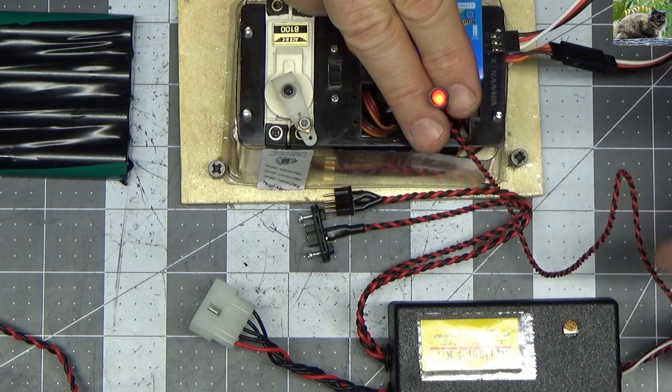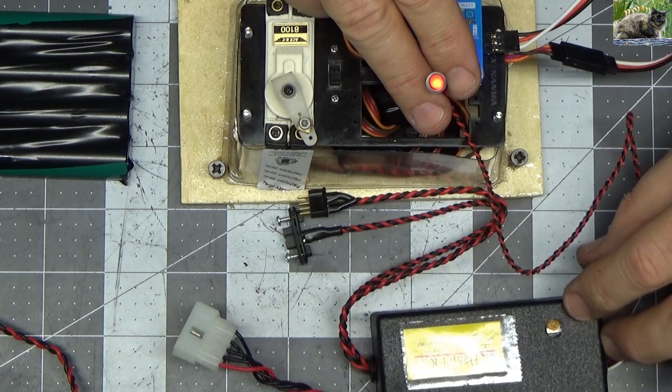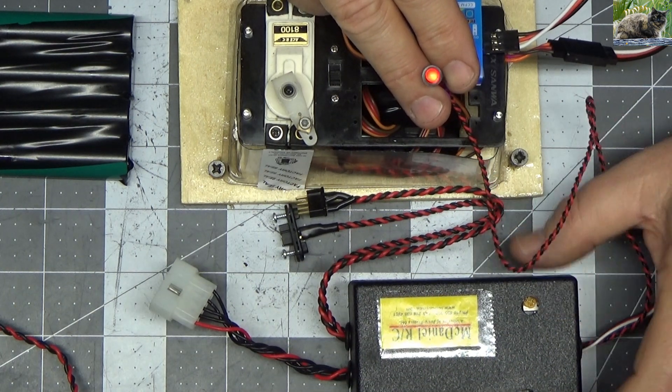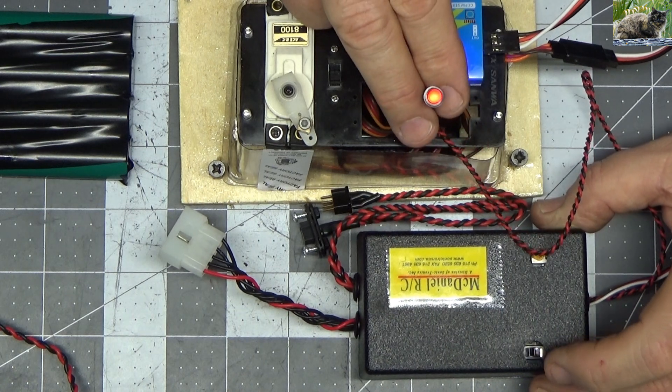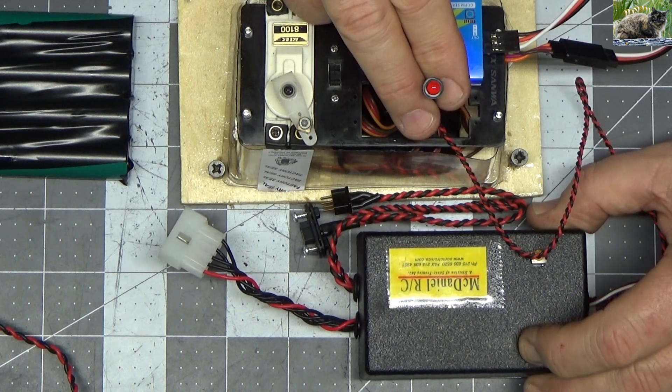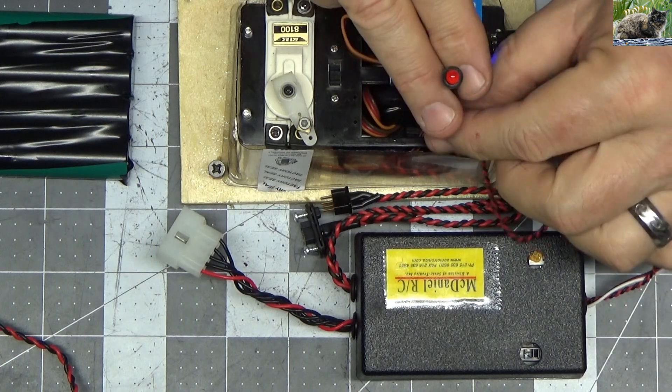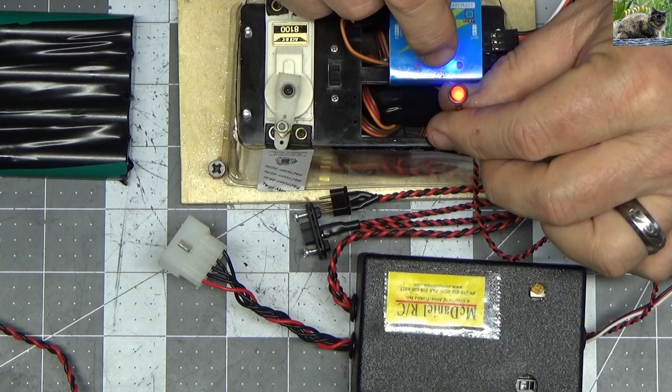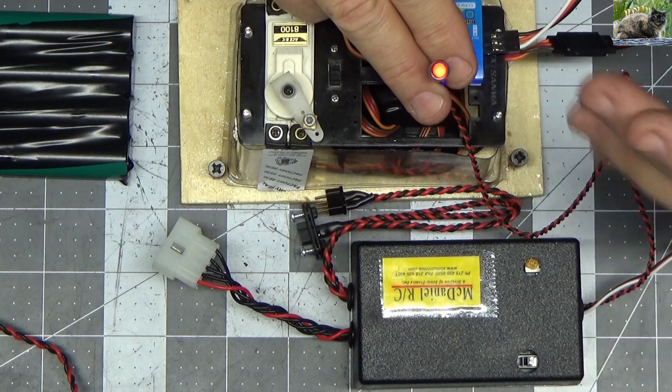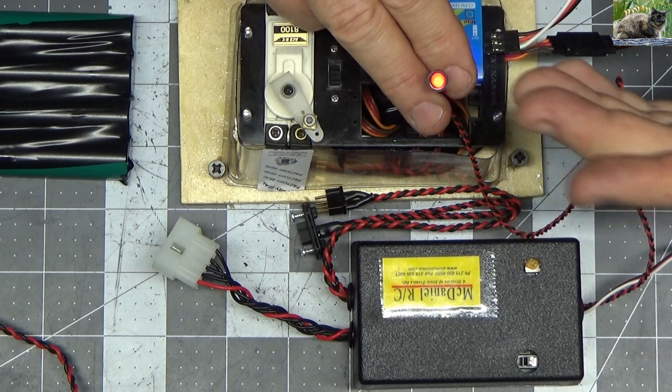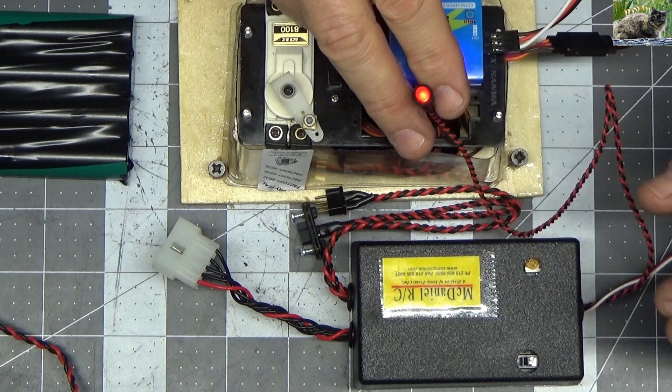Now you can adjust the set point of when this turns on and off by adjusting this potentiometer right here. Now there's a switch here also that you can servo reverse. So if you've got something set up backward, if I turn this, now that's off and now it isn't going to turn on until I'm further up the line. So this is a servo reverse switch or basically an inversion of when you're going to ignite the glow.